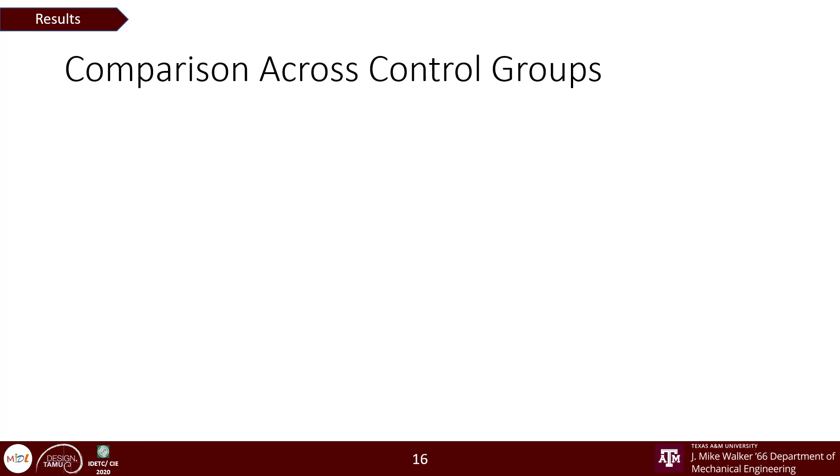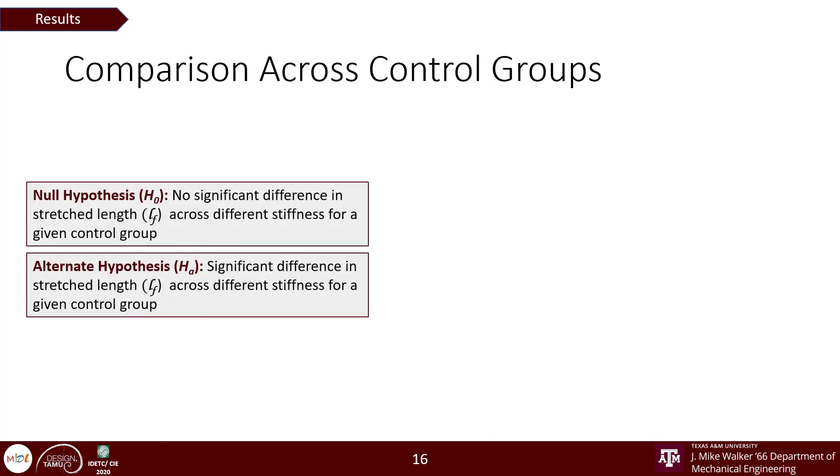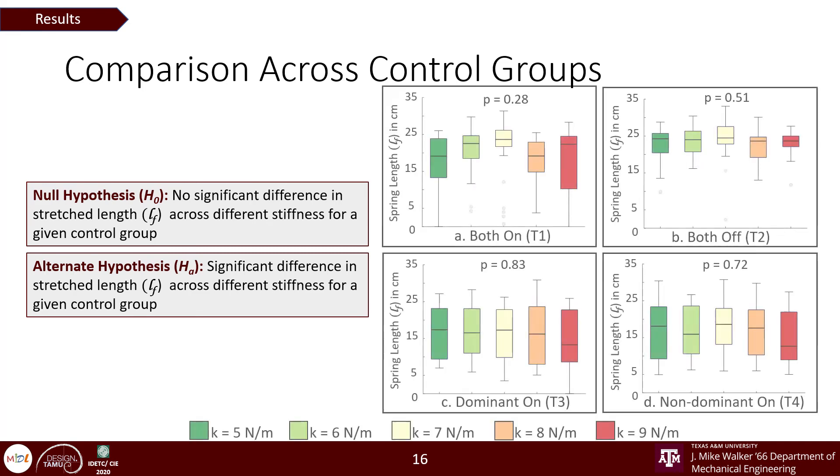Our second comparison is within different stiffness values for a given experiment condition. This is our null and our alternate hypothesis. We conducted a multiple comparison ANOVA test but couldn't find any significant differences in spring lengths for different stiffnesses across different control groups.